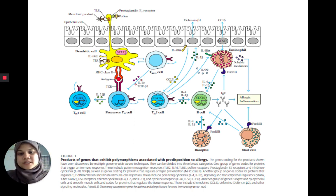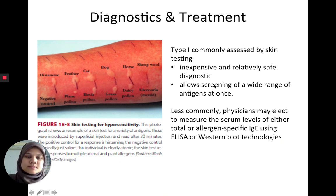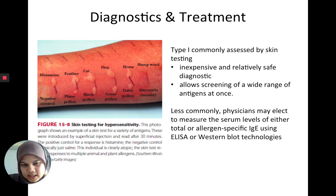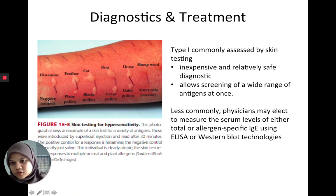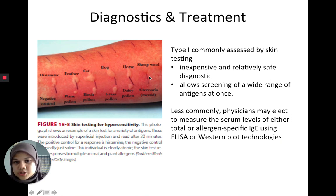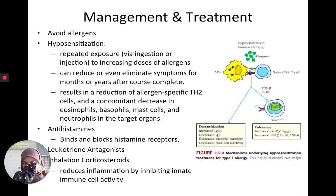For diagnostics and treatment, type 1 is usually assessed by skin testing — inexpensive, quite safe, and able to test multiple antigens. The physician places allergens on the skin and checks if a welt develops after 30 minutes, comparing results to histamine as a positive control and saline as a negative control. Another method is using immunoassays like ELISA or Western blots.